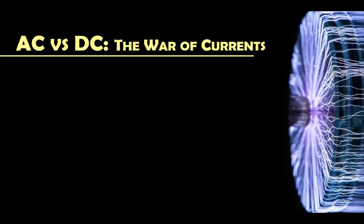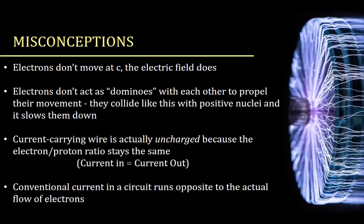A couple of misconceptions: a lot of people think that electrons move at the speed of light — they don't. The electric field is the one that does, and it's actually just slightly slower than C. Second, electrons don't act like dominoes hitting each other; they actually end up colliding with positive nuclei, which slows them down, so there's bouncing around rather than a straight-line flow. Third misconception: a current-carrying wire is actually uncharged because the electron-to-proton ratio stays the same — it's just which electrons you have that is changing, because current in equals current out.